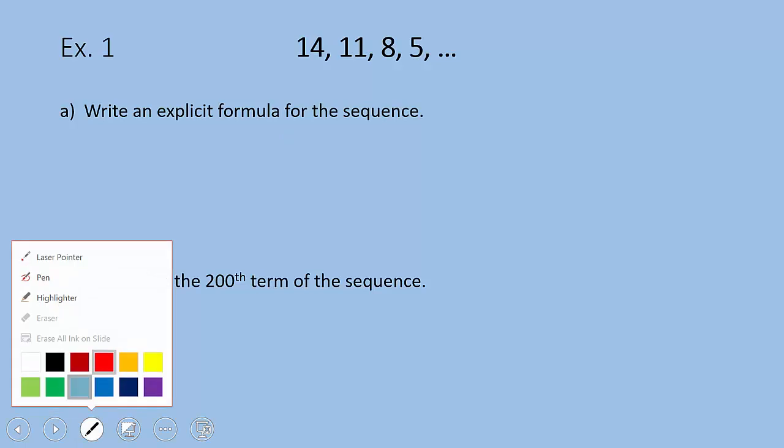Let's get into some examples. Our first example we're given a set of numbers 14, 11, 8, and 5. Let's just jump right in here. We should recognize that there's a pattern right here of subtracting 3 and that's consistent. That happens every single time we take a previous term, we subtract 3, and we get the next term.